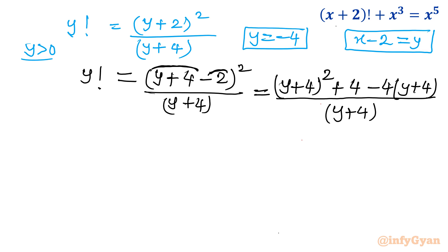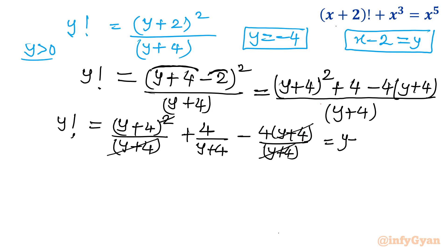Let's split our denominator. So I will get y factorial is equal to y plus 4 whole squared over y plus 4 plus 4 over y plus 4 minus 4 times y plus 4 over y plus 4. Now I will cancel y plus 4. So I will cancel 1 power with denominator. So what is left ultimately? Let me write here.